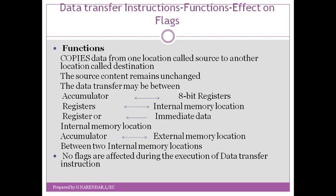What is the difference between copy and transfer? Transfer means the data is moved from source to destination, and after the transfer operation, the source is left with nothing — whatever was at the source is moved to the destination. But this is not the actual operation performed by data transfer instructions. Though the name says data transfer, the function performed is copying of the data from source to destination.